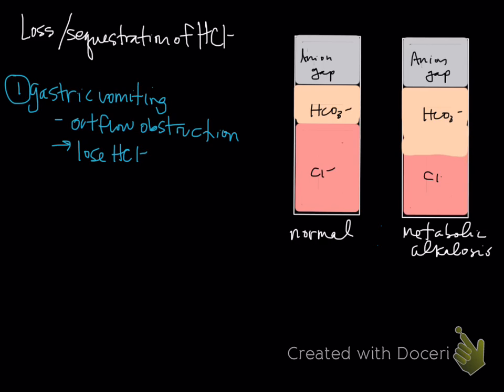So we lose hydrochloric acid and we get a metabolic alkalosis. Bicarbonate goes up, and we're going to have a decreased chloride. That was small animals — dogs and cats.